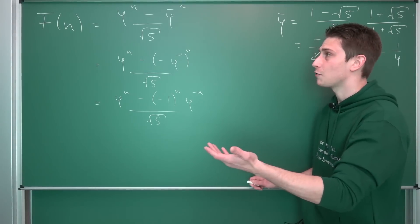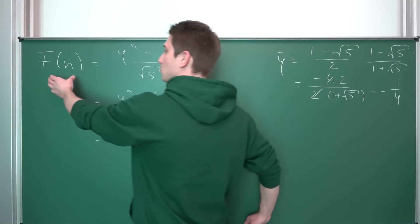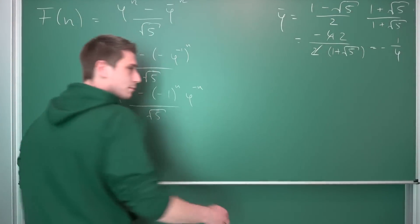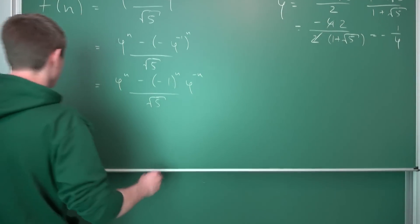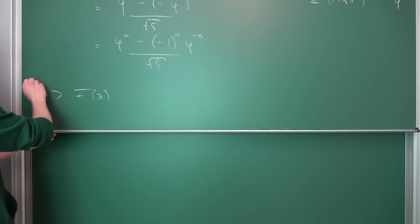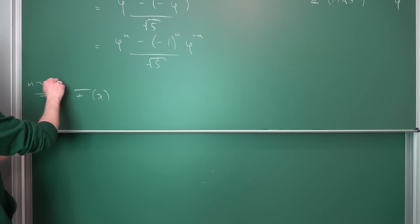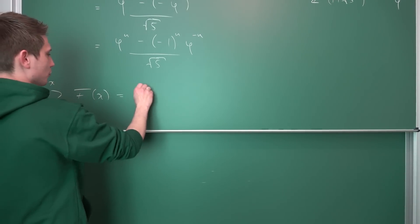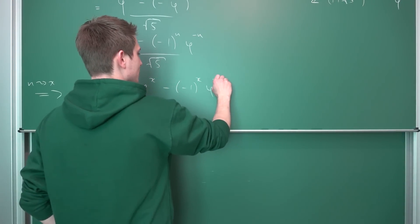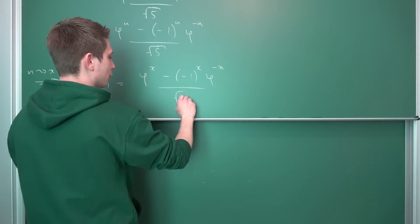So at first, let us define a function that goes from the real numbers to the real numbers in this case, or from the real numbers to the complex numbers, should I rather say. f of x. We are just going to let our n go to some real number.